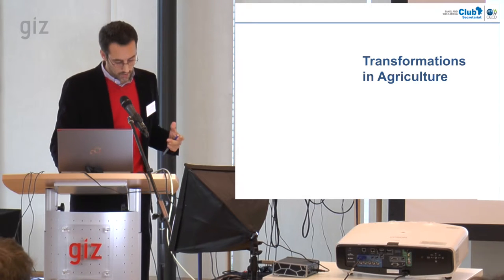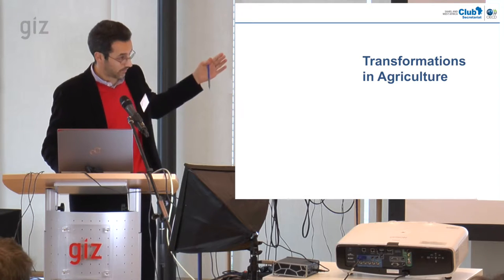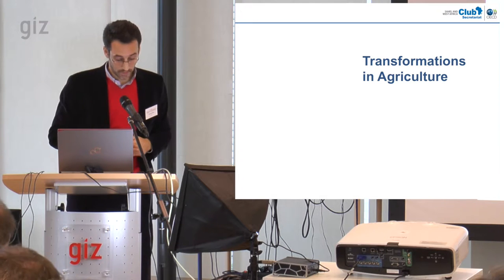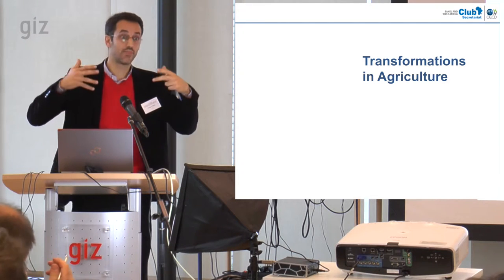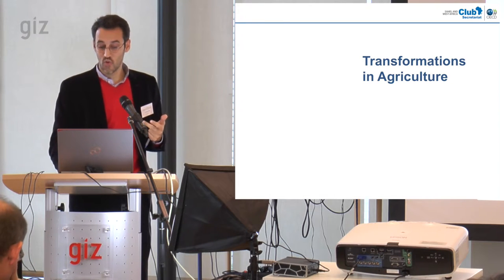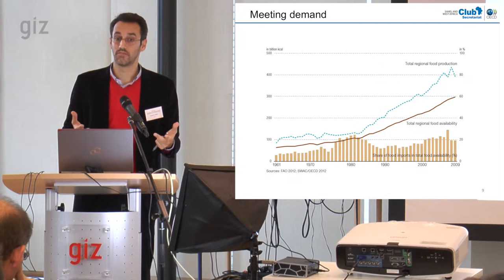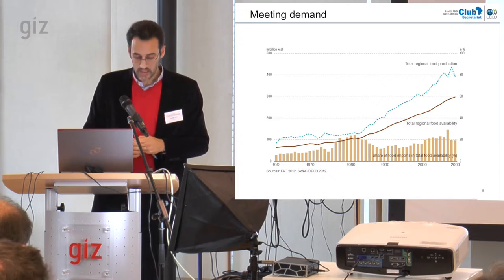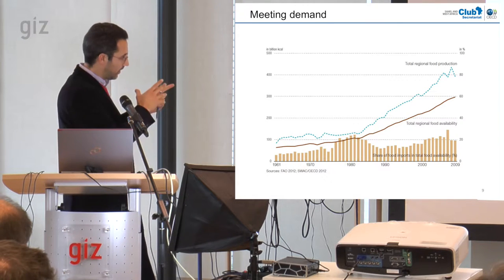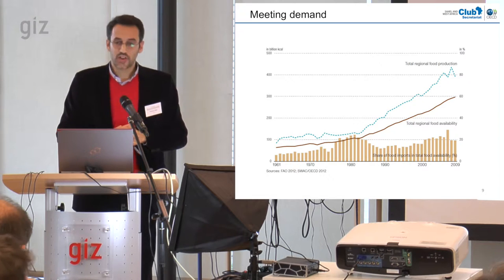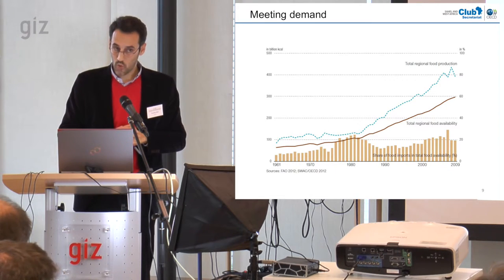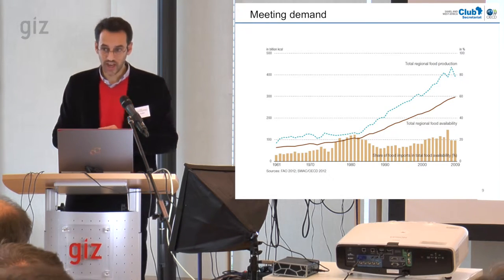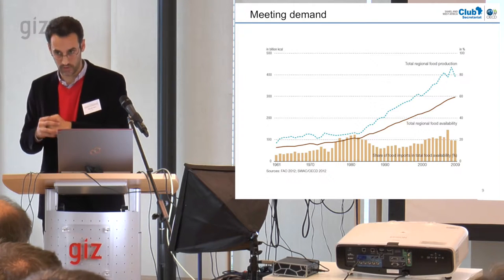To meet this growing number of consumers and growing market demand, West African farmers have had to produce more and generate a surplus. We believe at the SWAC that they have proved able to do so. Between 1980 and 2010, agricultural production growth in calories averaged 3.7% a year, making West Africa one of the fastest growing regions in the world — 1.8% above demographic growth.